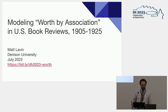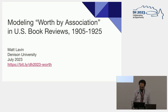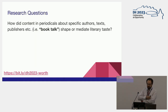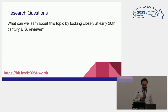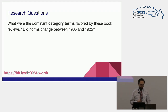Our first speaker needs no introduction because he is me. I'm going to be talking about this idea of worth by association in U.S. book reviews 1905 to 1925. I started with a research question about how content in periodicals about specific authors, texts, and publishers — this thing that I call book talk — how does it shape or mediate literary taste?